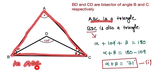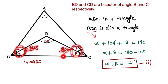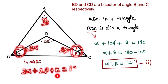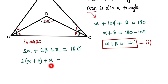Now we look at triangle ABC. The whole angle B is 2 alpha and the whole angle C is 2 beta, and angle A is x. So 2 alpha plus 2 beta plus x equals 180 degrees. Taking 2 as common: 2 times (alpha plus beta) plus x equals 180 degrees.